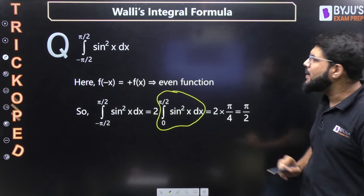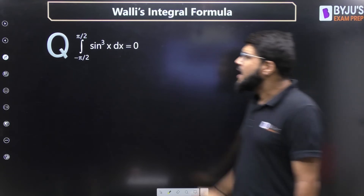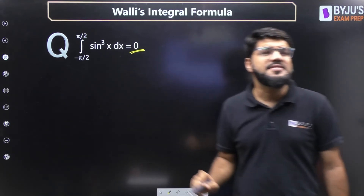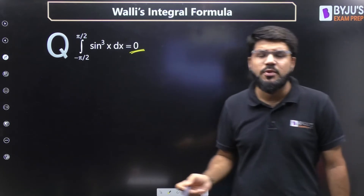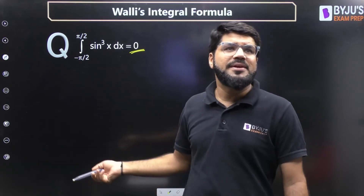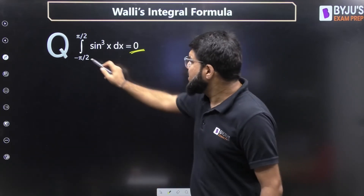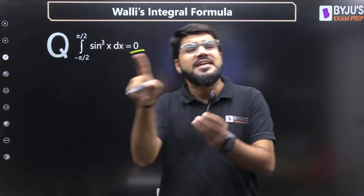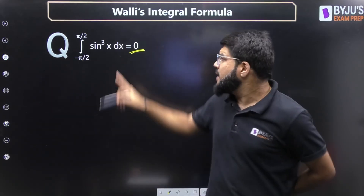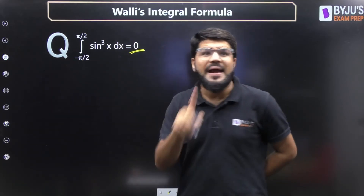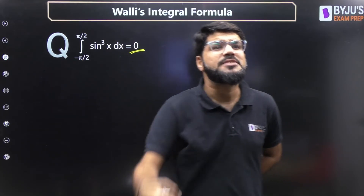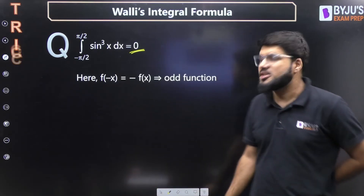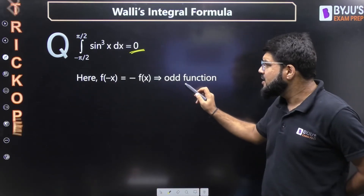If you get a question of this kind — integral from −a to a of an odd function — the answer is directly 0. For instance, sin³(x): since sin(−θ) = −sin(θ), we have (−sin x)³ = −sin³(x), so f(−x) = −f(x), making it an odd function. For an odd function, the integral from −a to a is always 0.